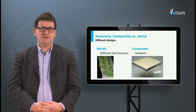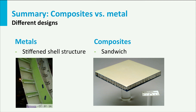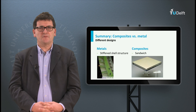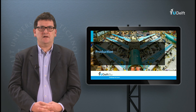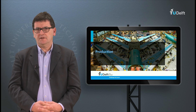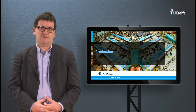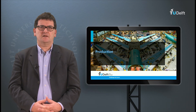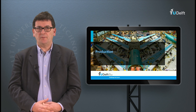Besides a difference in manufacturing processes, different materials also result in different designs. The stiffened shell structure in the left picture is typical for metal structures; the sandwich structure in the right picture is typical for composites. This underlines once more the triangle of design, manufacturing process and material, which is very important. So to conclude: materials, design and production are highly interrelated. This becomes very obvious if one compares the shapes and manufacturing processes of metal alloys and composites. The manufacturing processes are based on particular material properties, and designs or shapes also depend on the capabilities of the production processes.